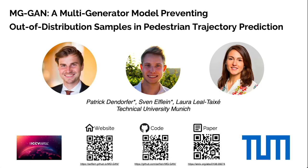Hello and welcome to the presentation of our ICCV 2021 paper, MG-GAN, a multi-generator model preventing out-of-distribution samples in pedestrian trajectory prediction.